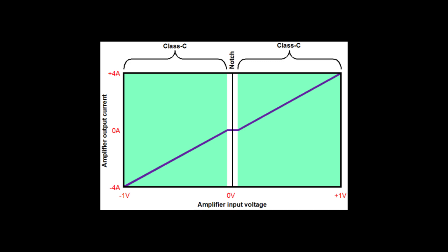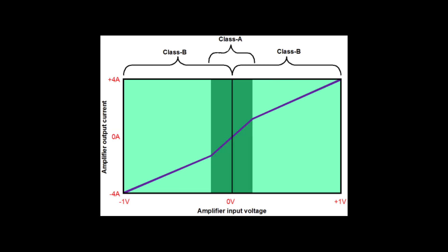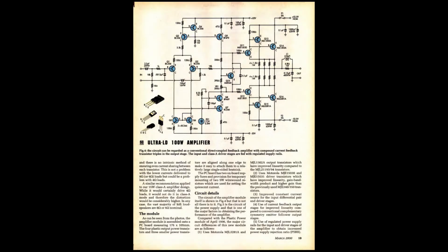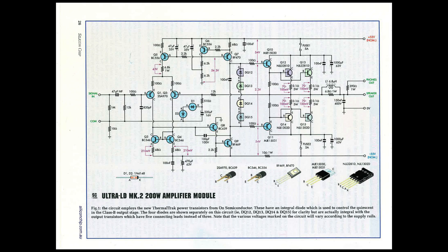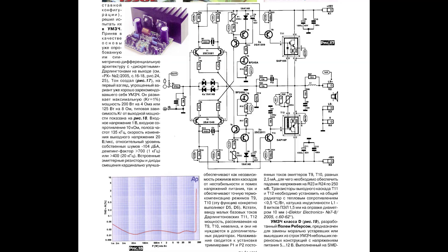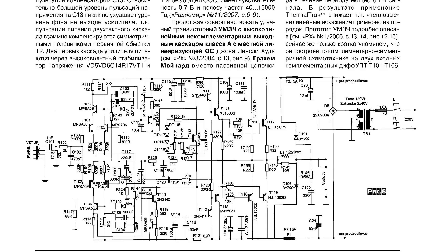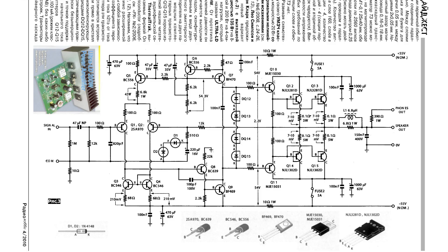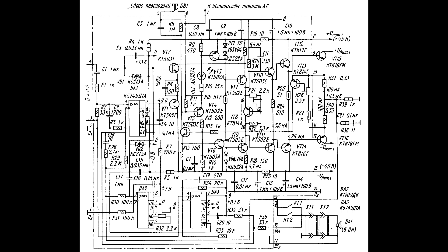У класса AB есть своя обратная ступенька, или в английском варианте GM-даблинг, которая не даёт возможности преодоления клира ниже 0,001%. Мы убедились в этом в первой серии этого мастер-класса, где подробно рассмотрели дюжину ОМЗЧ 21 века на самых совершенных транзисторах — термолтраках — разных англоязычных авторов, которые так и не преодолели порог 0,001%, заданный ещё ВВшником 89 на КТ 818-819.